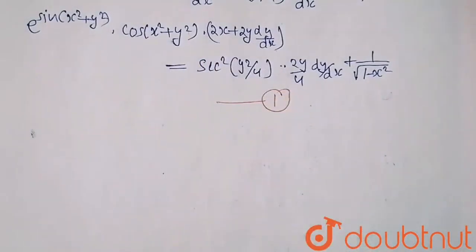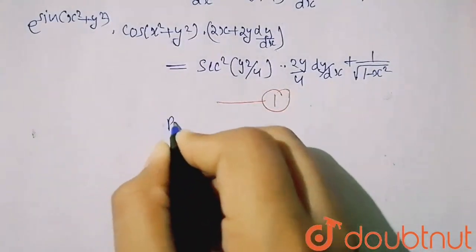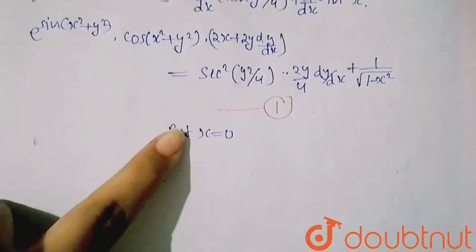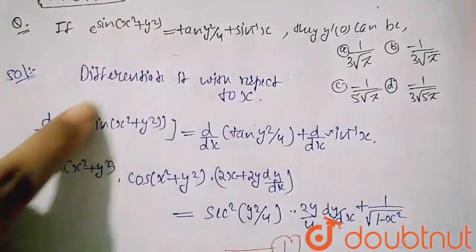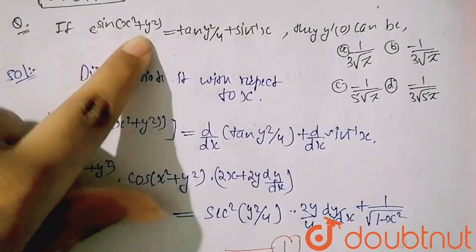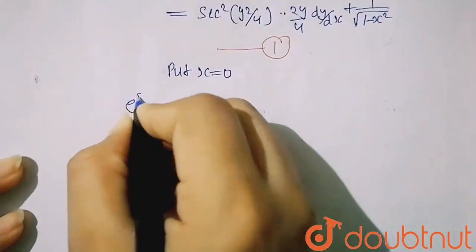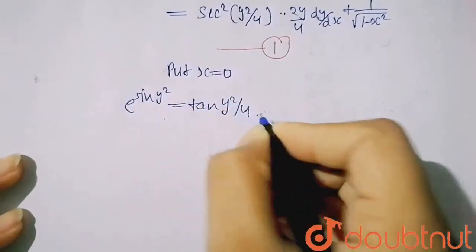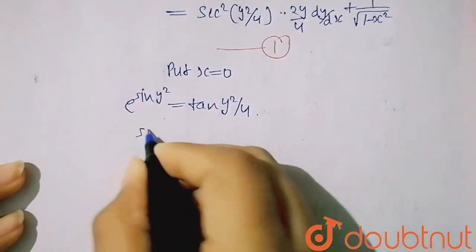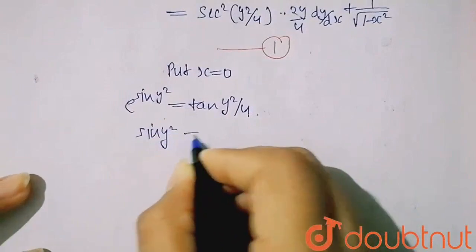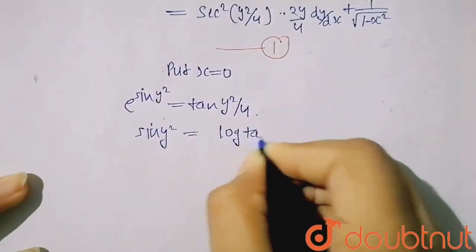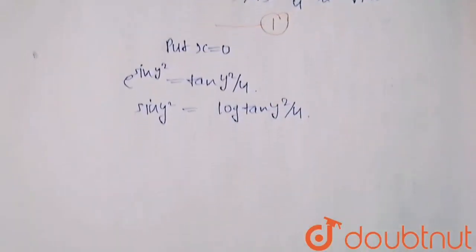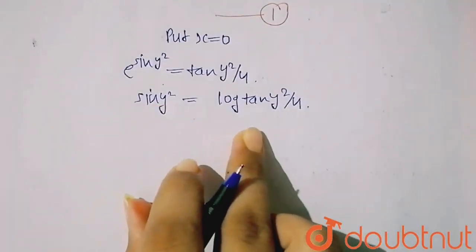This equals tan(y²/4) differentiated as sec²(y²/4) into (2y/4)·(dy/dx), plus sin⁻¹x differentiated as 1/√(1 - x²). Take this as equation 1. Now, putting x = 0 in the original question gives e^(sin(y²)) = tan(y²/4). So sin(y²) = log(tan(y²/4)).